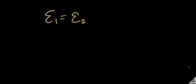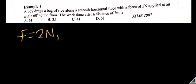Question one: a boy drags a bag of rice along a smooth horizontal floor with a force of 2 newtons applied at an angle of 60 degrees to the floor. He walked a distance of 3 meters. When solving in physics, make sure you write out your parameters. So F is equal to 2 newtons, and theta is equal to 60 degrees.